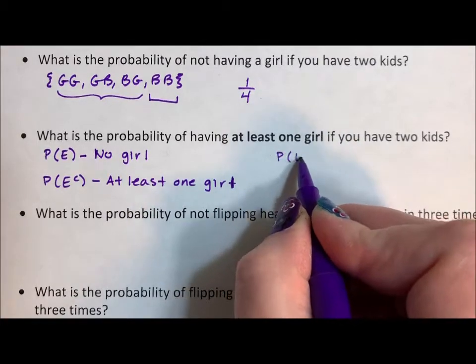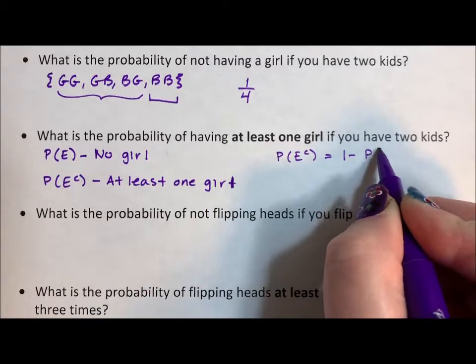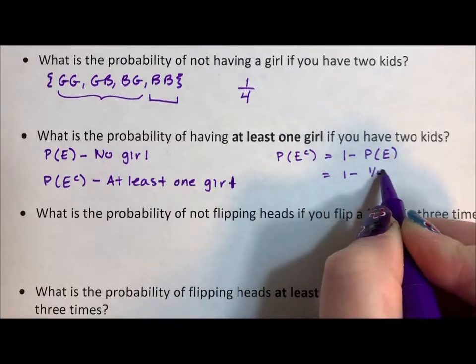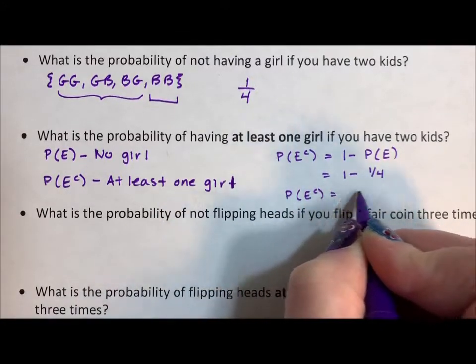The probability of our complement is one minus the probability of the event, which is one minus one-fourth. So the probability of our complement is three-fourths.